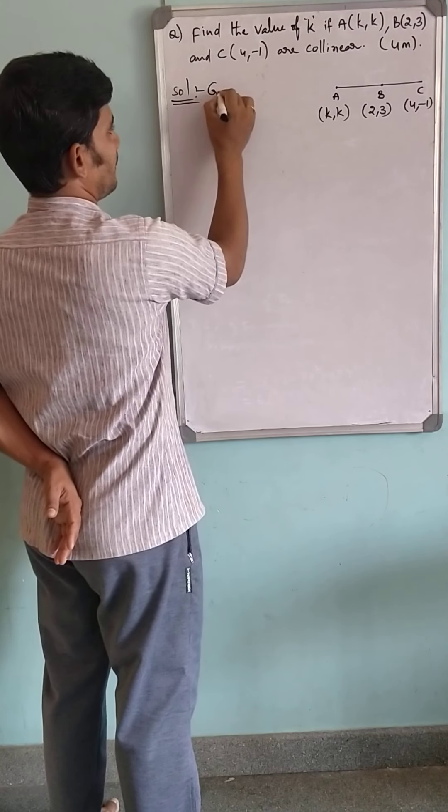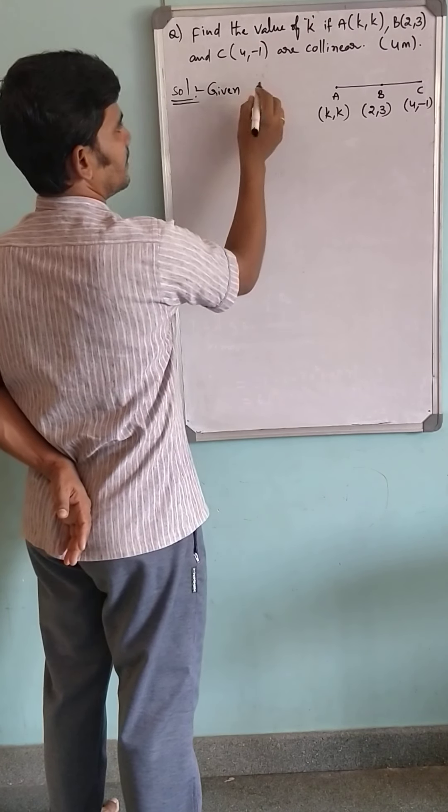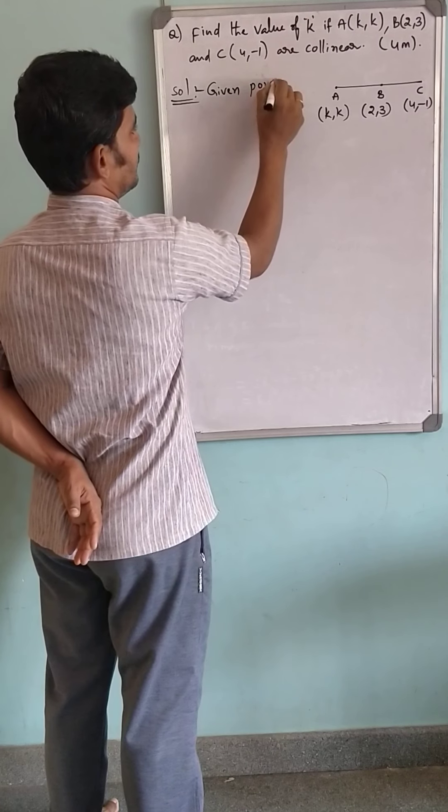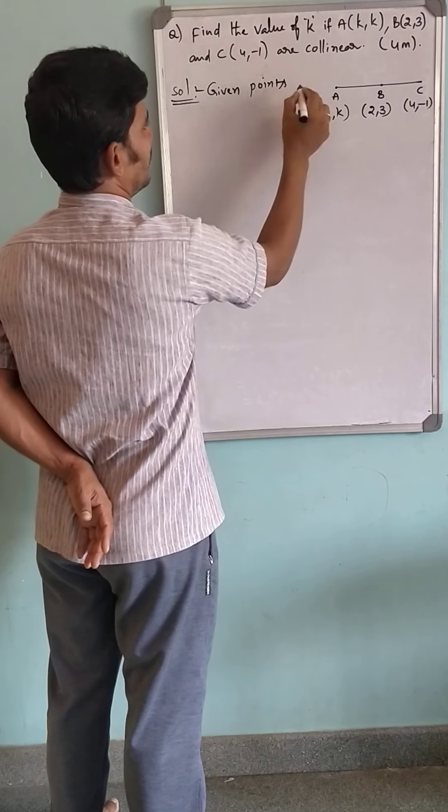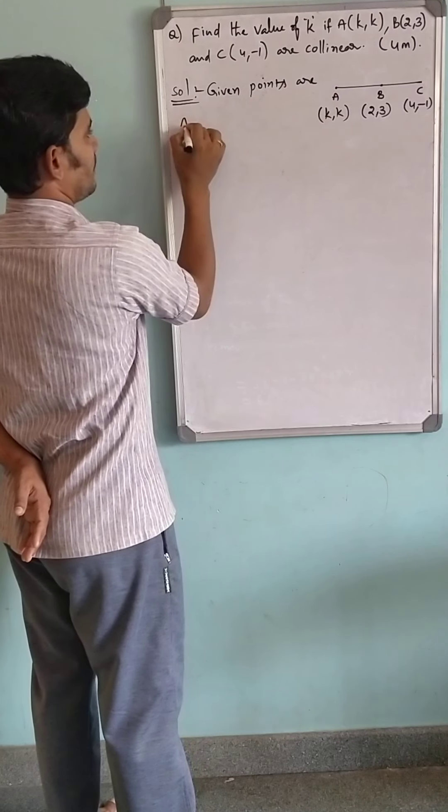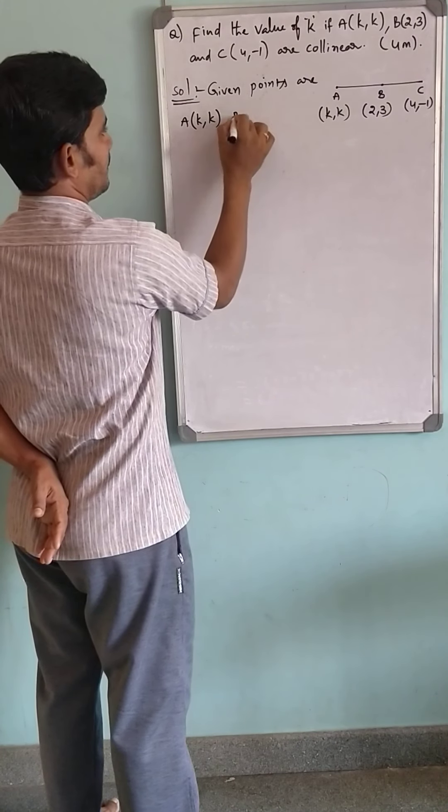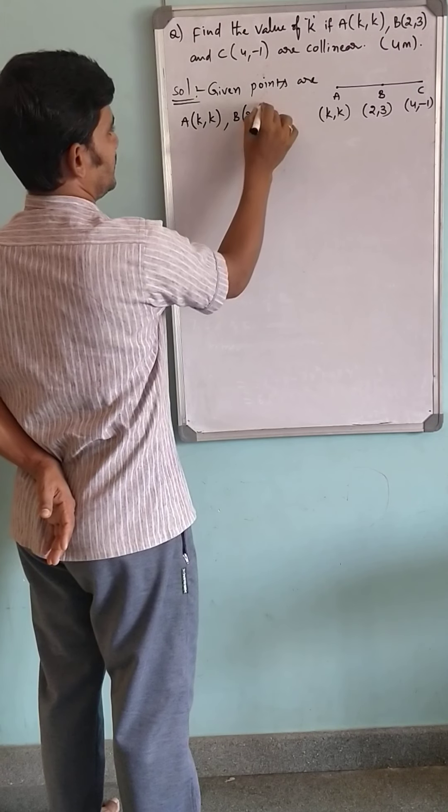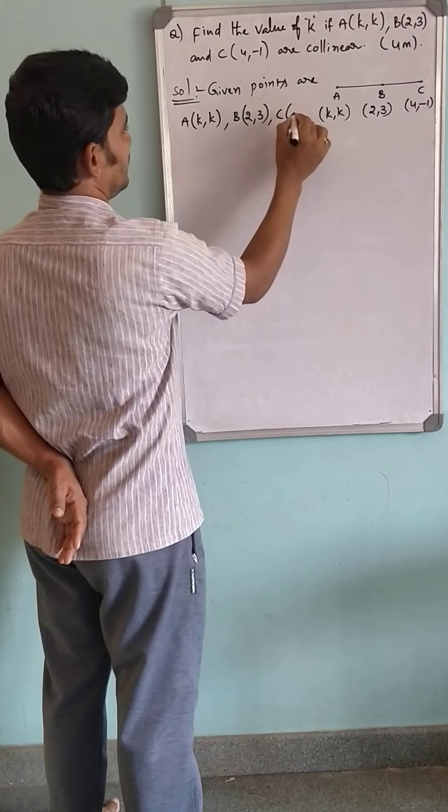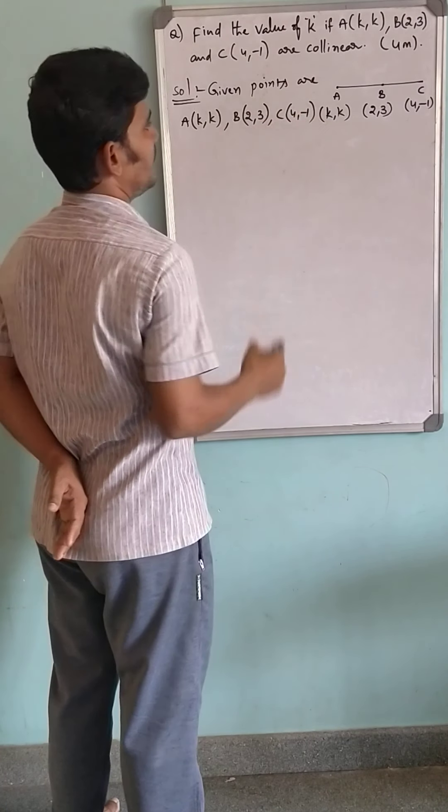Given points are A(K, K), B(2, 3), and C(4, -1).